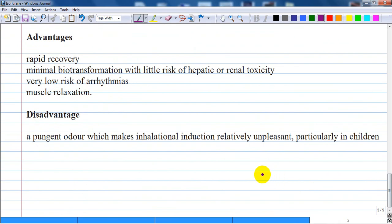In summary, the advantages of isoflurane: rapid recovery, minimal biotransformation with little risk of hepatic or renal toxicity, low rate of metabolites, very low risk of arrhythmias, and it produces or potentiates muscle relaxation.